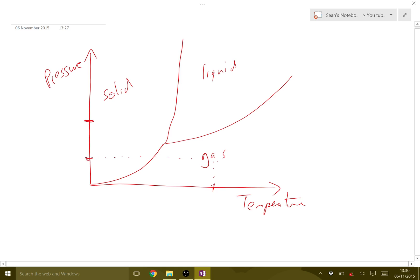But you can see if we were at a pressure down here and increase the temperature, we actually go straight from a solid to a gas - we miss out the liquid phase. That's why phase diagrams are important: they tell us what's going on at every single pressure and temperature.